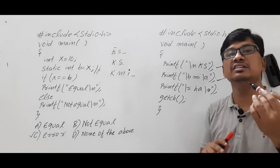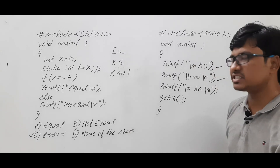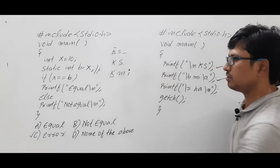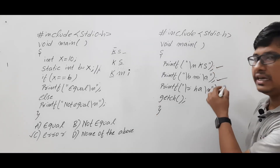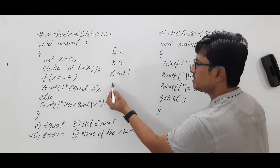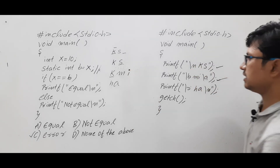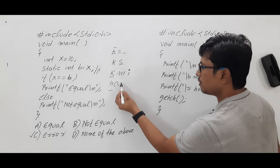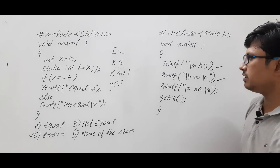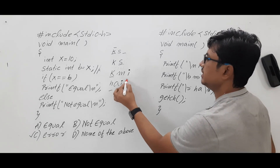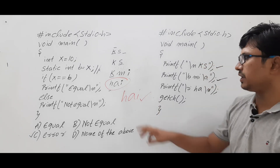Next is '\r', which is carriage return — the cursor moves back to the first character position, pointing to 'k'. Then 'ha' is printed: in place of 'k', 'h' is printed, in place of 'm', 'a' is printed. Then '\n' moves the cursor to the next line, and 'i' remains at that position. So this program will print the output as 'hai'.